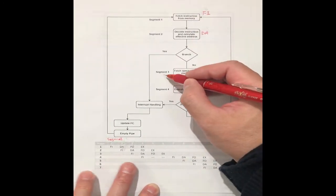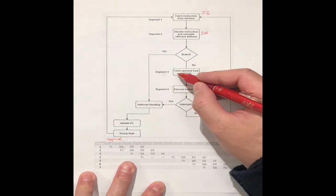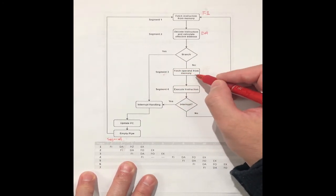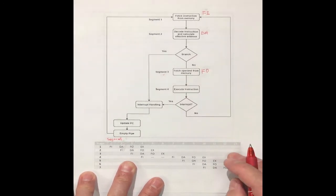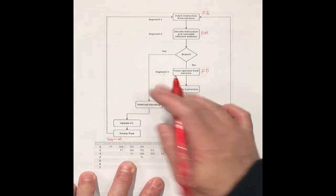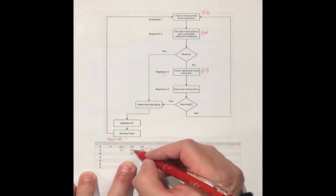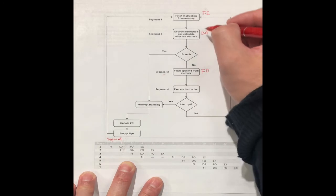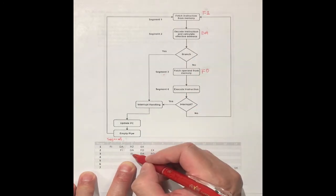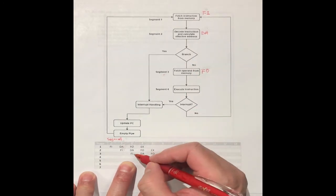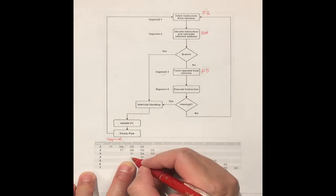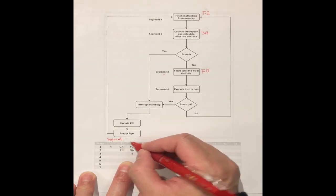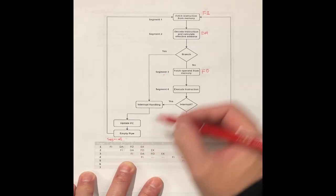In segment three, it fetches the operand from memory. We call this FO, fetch operand. In segment three, you can execute FO, and at the same time you can do the DA decode instruction, and also you can do the FI fetch instruction. So you can do three instructions simultaneously.